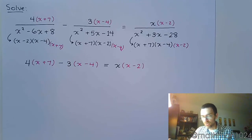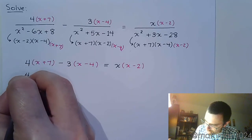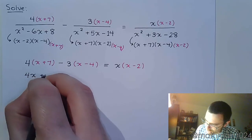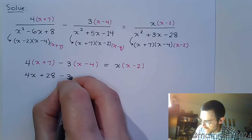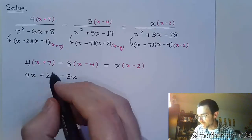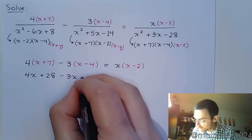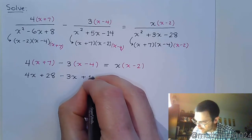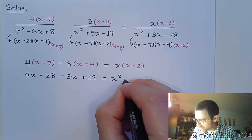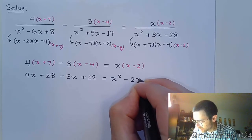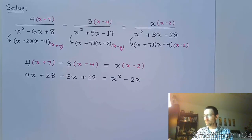So I suggest writing that step using your color so you can see what those changes are. And then you multiply. So here we have 4x + 28, and this is minus 3x. Be careful when you distribute the negative. This is negative 3 times negative 4, so plus 12 equals, and this is x² - 2x.